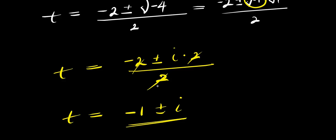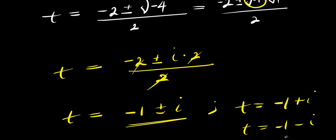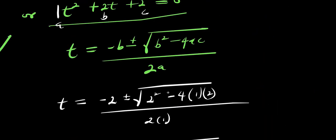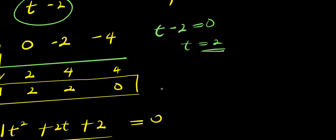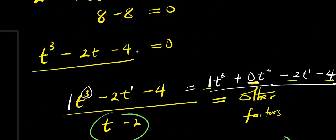After simplifying — the 2s cancel — we have t equals negative 1 plus or minus i. That means we have two complex solutions: t equals negative 1 plus i, and t equals negative 1 minus i. Combined with the real solution t equals 2, we have three solutions in total.